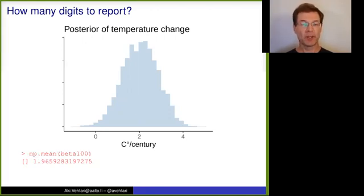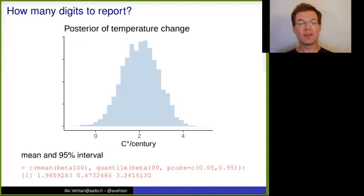Python is even worse. By default it's reporting even more digits. But now we can start to look, even without considering the stochasticity of MCMC, considering just that these would be exact numbers. How many digits we would like to report? If you look at the posterior mean and also these quantiles.